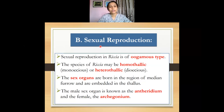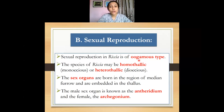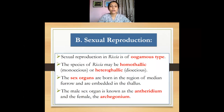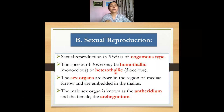Now let us move on to sexual reproduction. The sexual method of reproduction in Riccia is of the oogamous type — similar to oogamous reproduction found in some algae. They may be monoecious (homothallic) or dioecious (heterothallic) depending on whether the antheridia and archegonia are borne on a single plant or on different plant bodies. However, whether homothallic or heterothallic, the sex organs — antheridia and archegonia — in Riccia are always embedded within the thallus. This is a very peculiar character of Riccia.